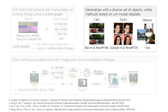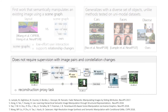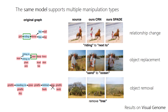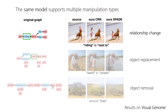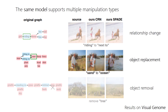The method generalizes in diverse datasets, different from single-focused image editing works. Importantly, our training does not need image editing pairs with changes. A single trained model supports diverse semantic manipulation types, such as relationship changes, object replacements, and removal.